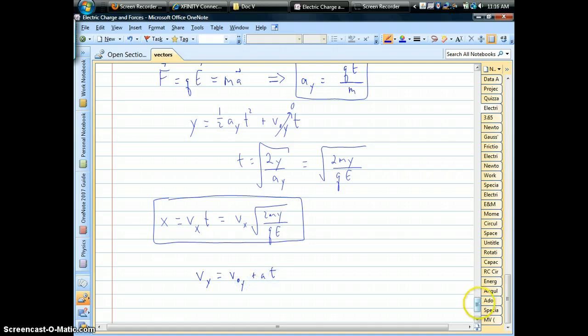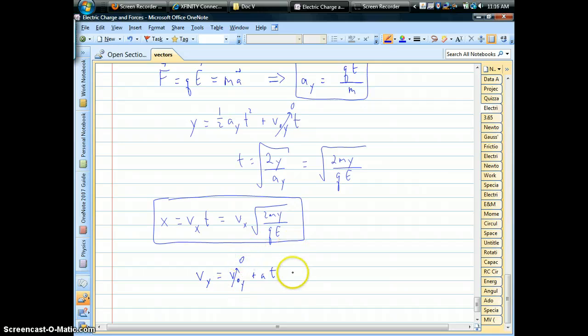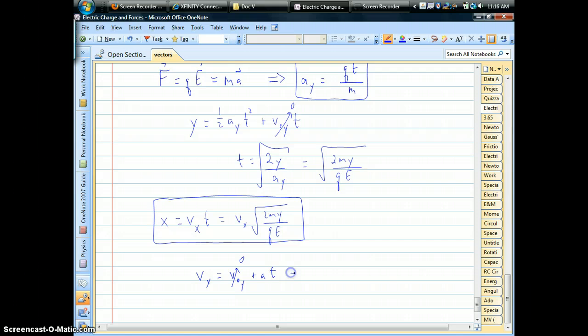Here's another one of our constant acceleration equations. And again, if there's no initial vertical speed, you don't have to worry about that first term. And then it just becomes acceleration multiplied by time.